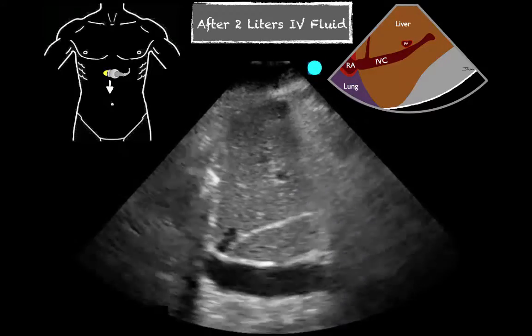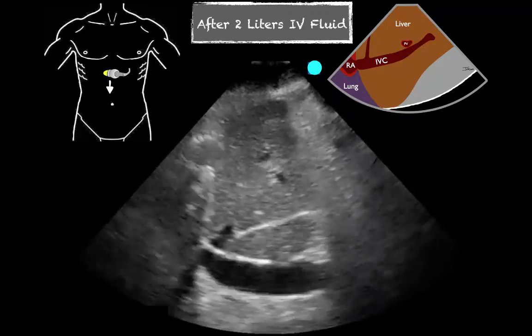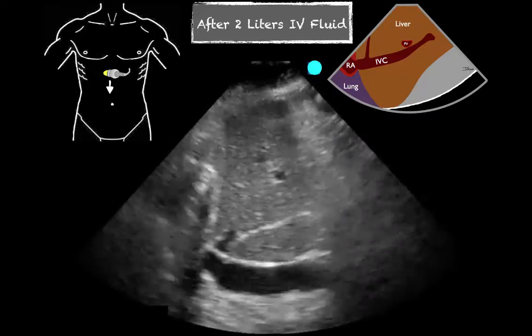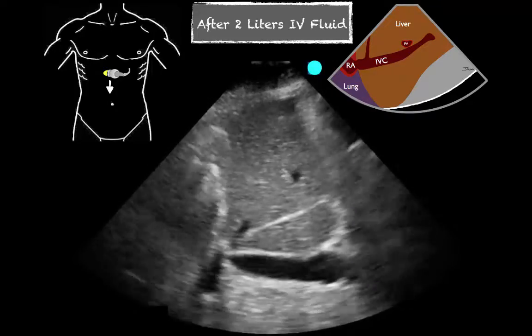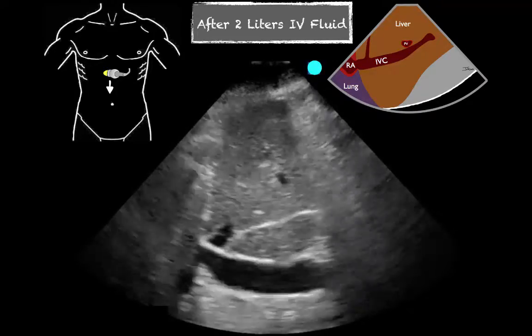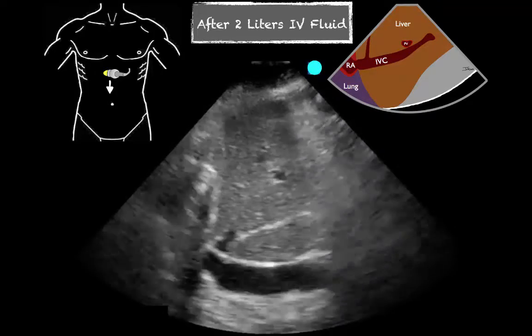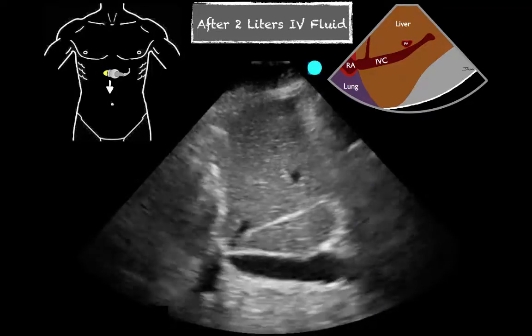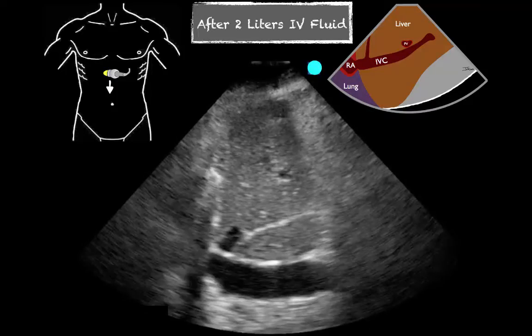And this is what we have after the second liter — even more distended, a little less variation. The patient was doing well and blood pressure improved significantly.